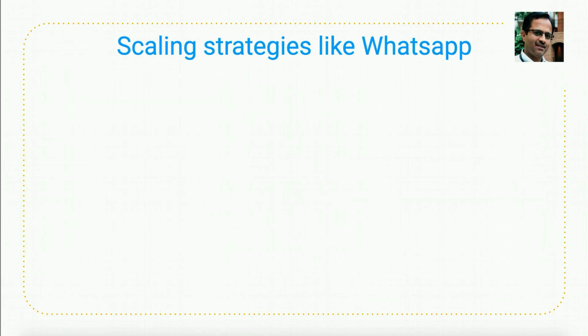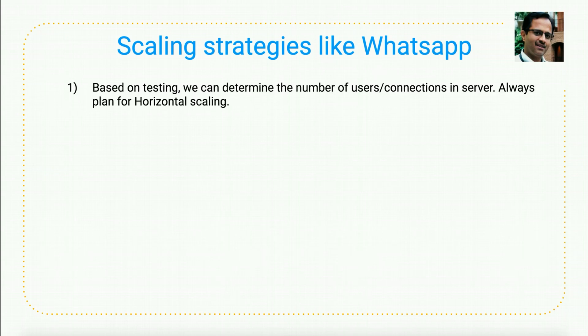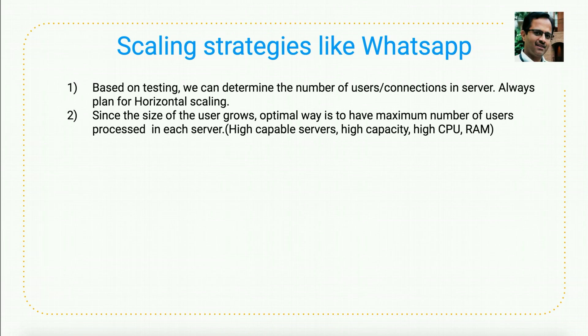For scaling strategies: first, test one node to understand how many connections it can handle and how many messages it can send per day. To increase connections, users, or messages transferred per day, proportionally increase the number of nodes. Second, since the number of users in WhatsApp and Facebook Messenger grows day by day, the recommendation is to have high-capacity machines capable of serving a large number of users per node.